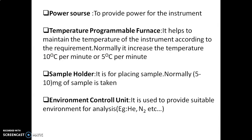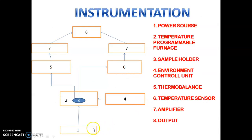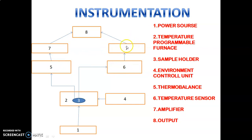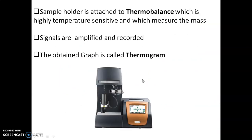To summarize the instrument flow: we provide power to the temperature programmable furnace; the sample is placed according to the program; the environment controller unit provides the required atmosphere; the thermobalance measures mass; the temperature sensor records temperature; the two data signals go to the amplifier; and the output is known as the thermogram.